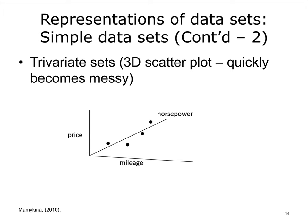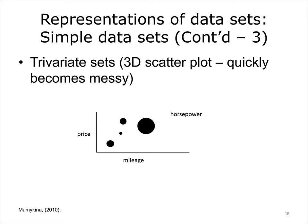As you add more dimensions, simple visualizations quickly become messier. For example, here we add another dimension to include horsepower to our scatter plot. However, three-dimensional plots are usually relatively difficult to interpret, due to such issues as occlusion, when some elements of the visualization block others. An alternative to increasing the number of dimensions is to manipulate other visual properties. For example, here we use spatial orientation for price and mileage, and size of a visual element for the third dimension, such as horsepower.